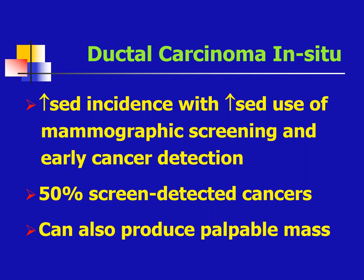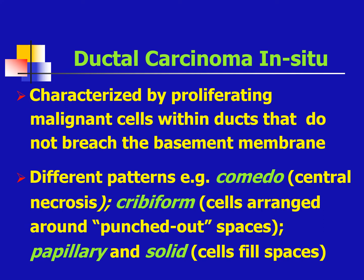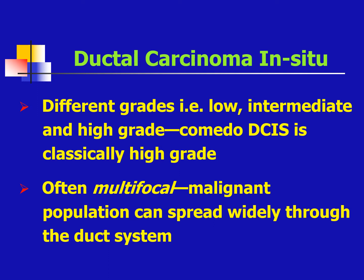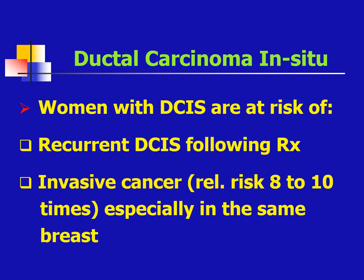Ductal carcinoma in situ (DCIS) has increased in incidence because of increased use of mammographic screening and early cancer detection. This represents 50% of screen-detected cancers and may also produce a palpable mass. It is characterized by proliferating malignant cells within ducts that do not breach the basement membrane. There are different patterns: comedo, cribriform, papillary, and solid, and different grades: low, intermediate, and high. Comedo DCIS is typically high grade. These are often multifocal, as the malignant population can spread widely through the duct system. Women with DCIS are at risk of recurrent DCIS following treatment and invasive cancer, especially in the same breast.